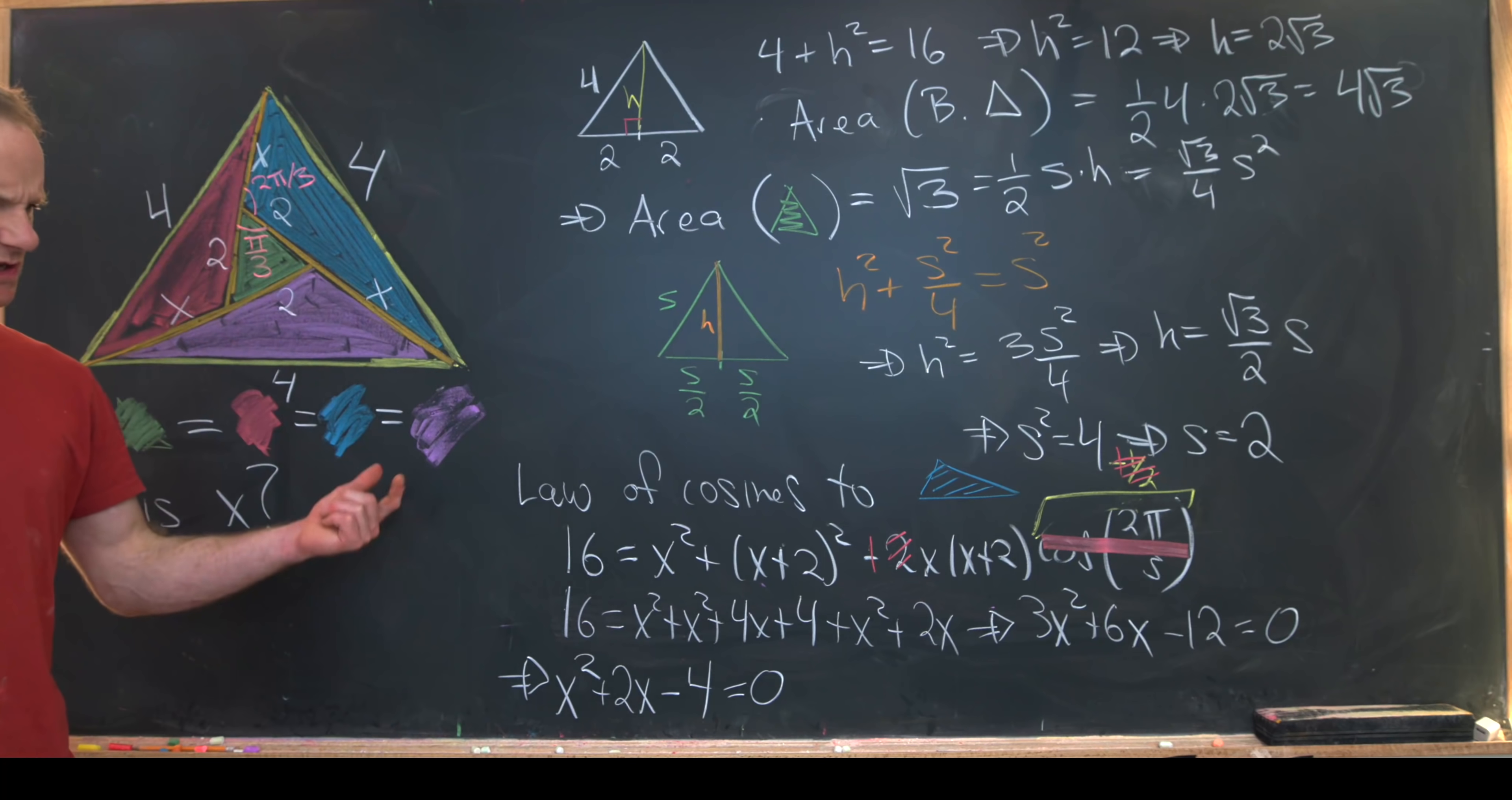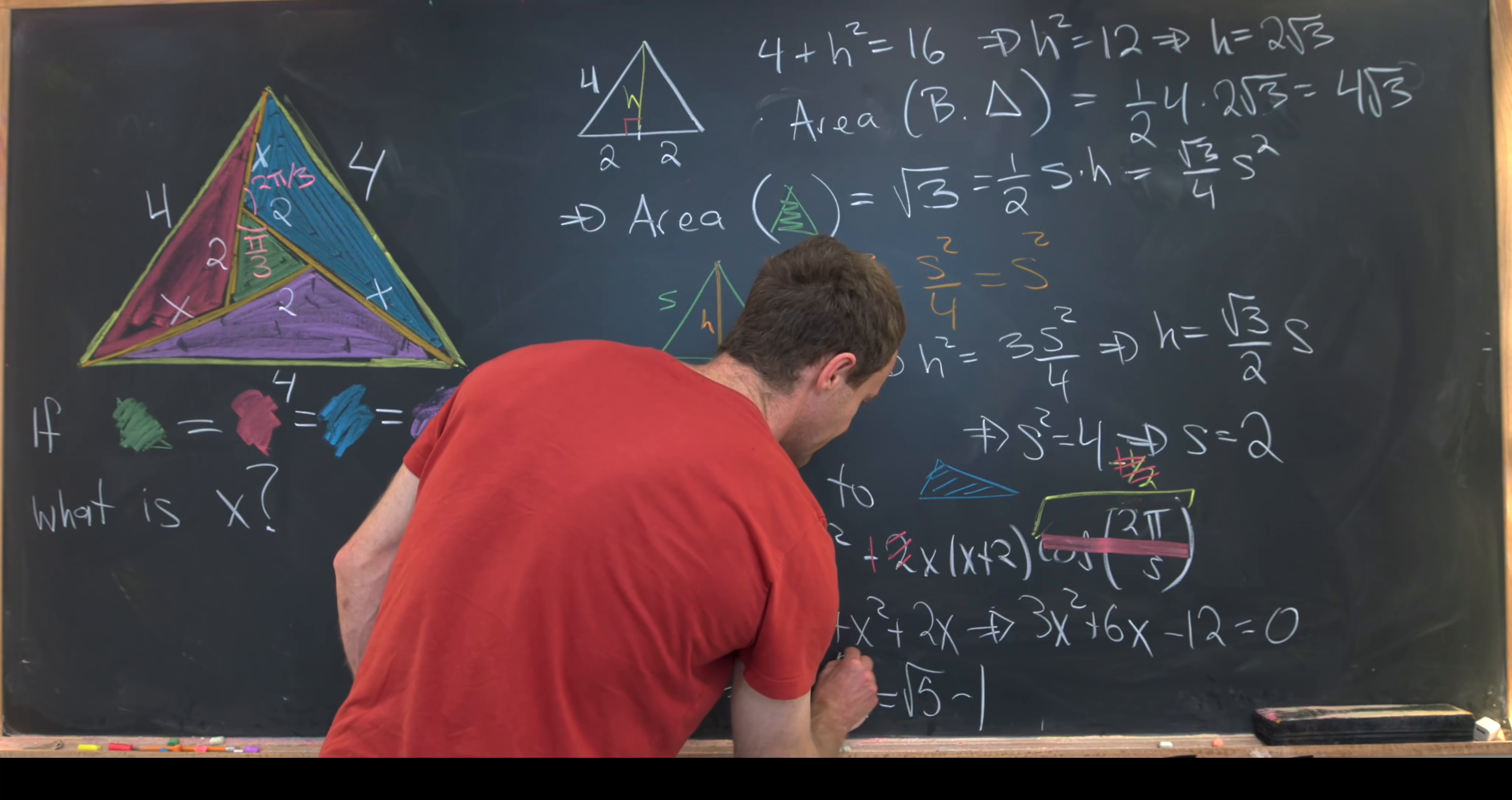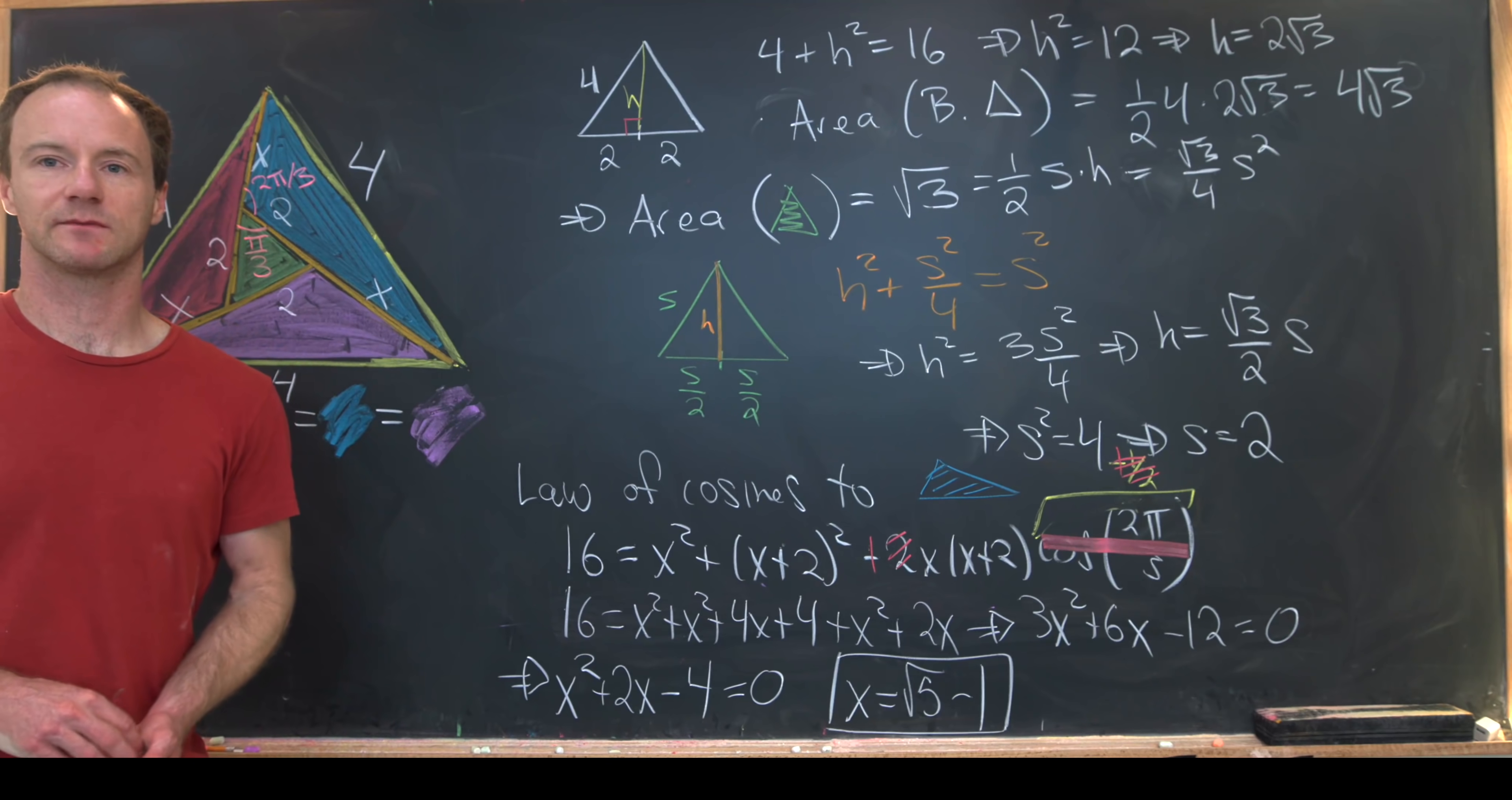And then we can use maybe the quadratic formula if you like. And I'll leave it to you guys to check that the solution we will get is x equals the square root of 5 minus 1. We will in fact get a positive and a negative solution. But we clearly have to keep the positive solution for our setup. And that's a good place to stop.